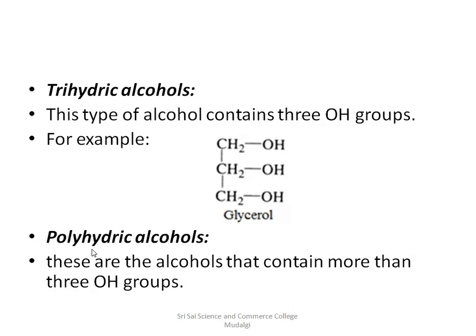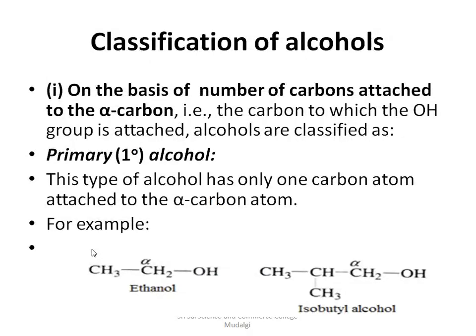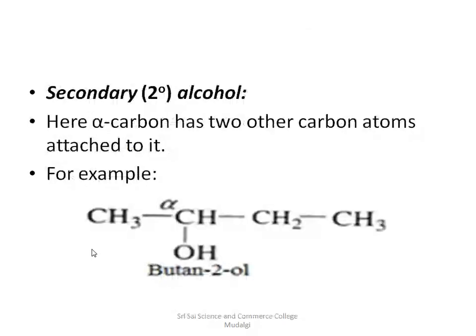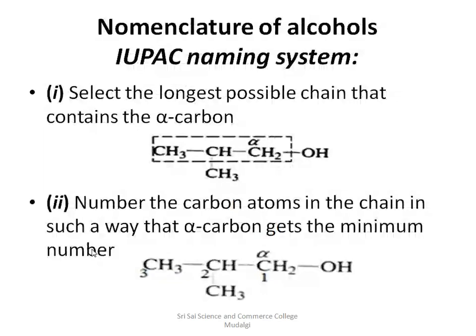On the basis of the number of OH groups attached, we classify alcohols as monohydric, dihydric, trihydric, and polyhydric alcohols. Based on the first method of classification — the number of carbons attached — we call them primary, secondary, and tertiary alcohol. The next concept is nomenclature of alcohols using the IUPAC naming system. The first rule is to select the longest carbon chain that contains the alpha carbon atom.